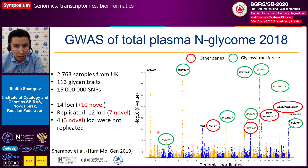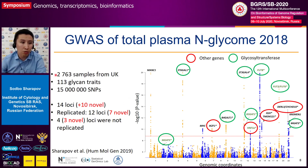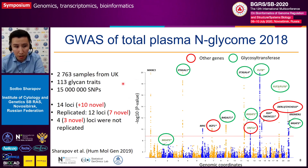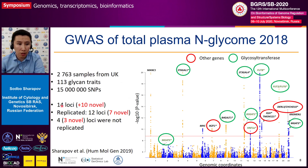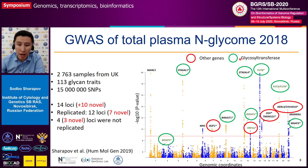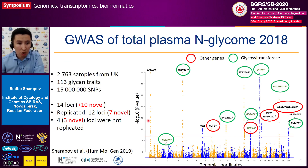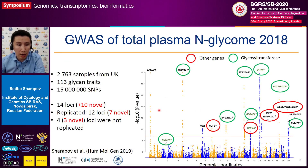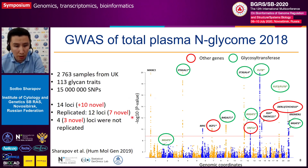Seven years later, we conducted the next round of genome-wide association study of total plasma N-glycome. In this study, we used almost 2,800 samples from the UK. We analyzed the association between 113 different glycan traits and almost 15 million SNPs. We found 14 loci that passed genome-wide significance levels. On the slide, you can see a Manhattan plot, which is a superposition of 113 different Manhattan plots. Among these 14 loci, 10 loci were novel. Then we conducted a replication study stage where we aimed to replicate 12 loci, and 7 loci showed the association with total plasma N-glycome for the first time.